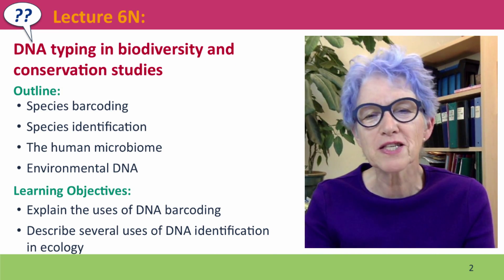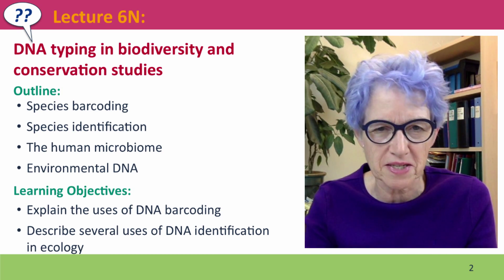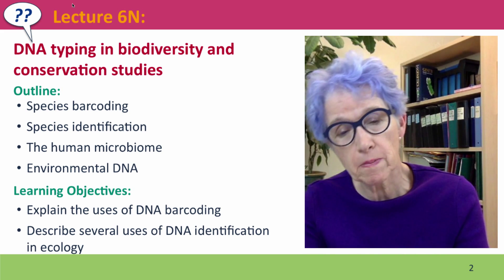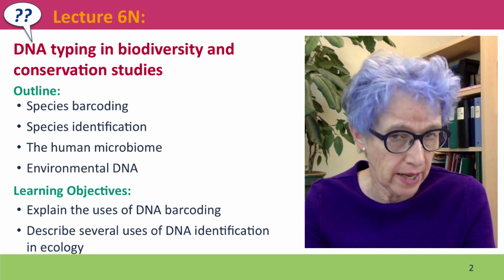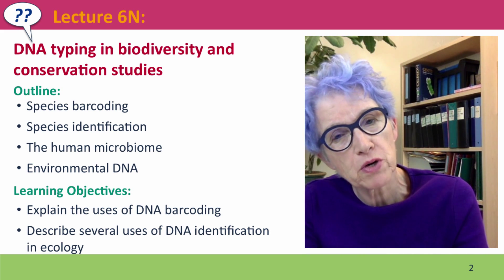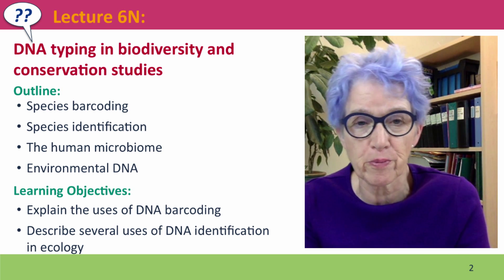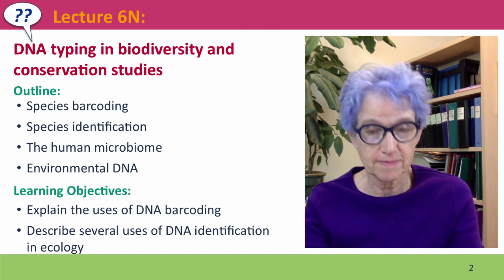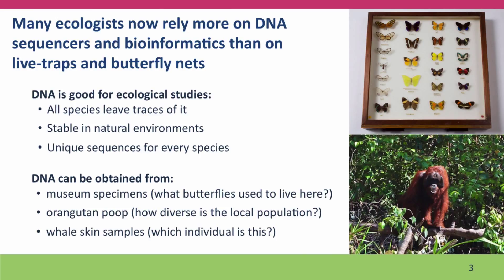Welcome back to Useful Genetics. This is Lecture 6N, the last lecture of Module 6. We're going to talk about how DNA typing can be used in various areas of ecology, including species barcoding, the human microbiome, and environmental DNA. Many ecologists are now more dependent on DNA sequencing techniques than on gumboots and butterfly nets, the traditional tools of ecology.